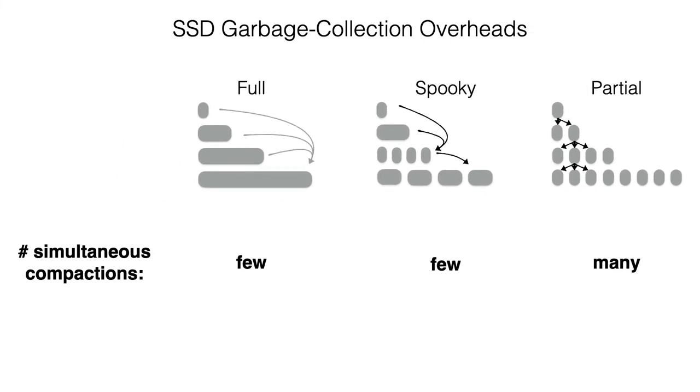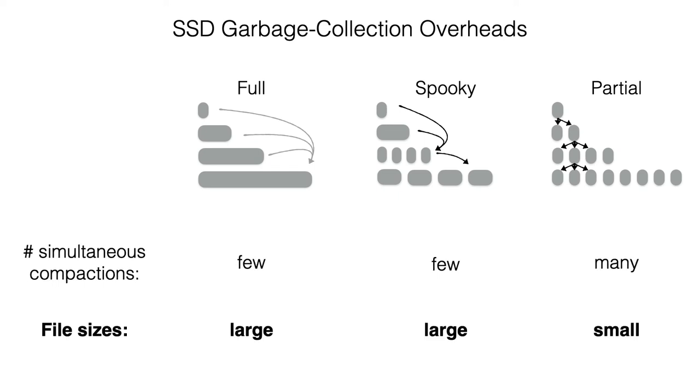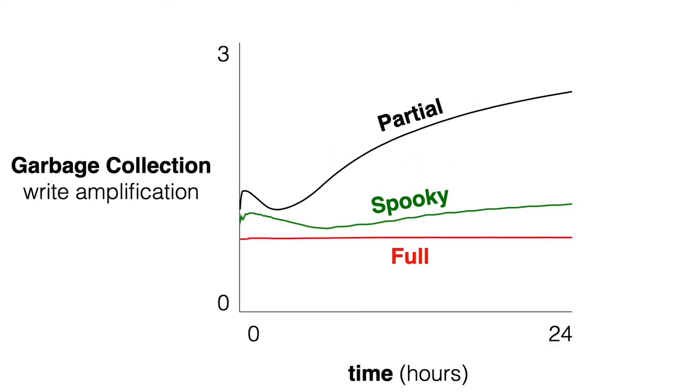Let us now discuss garbage collection overheads. First, full merge and Spooky perform fewer simultaneous compactions than with partial merge. This leads to fewer files with different lifespans becoming interspersed within the SSD. At the same time, full merge and Spooky write larger files than with partial merge. Therefore, when a file dies, more contiguous space becomes free all at once, thus making it easier for the SSD to perform efficient internal garbage collection. In the following experiment, we benchmark the underlying SSD's write amplification using the Linux NVMe command. We see that Spooky achieves slightly higher garbage collection write amplification than full merge, primarily because its data size is twice as large. At the same time, Spooky significantly improves on partial merge by writing larger or fewer files simultaneously.